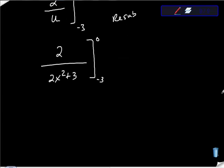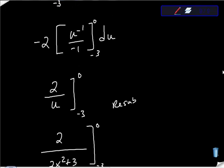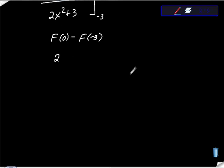Now what we're going to do is evaluate this thing. I'm going to evaluate f(0) minus f(-3). f(0) is 2/3, isn't it? f(0) is 2/3.